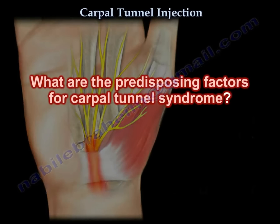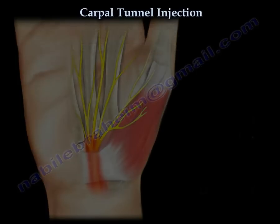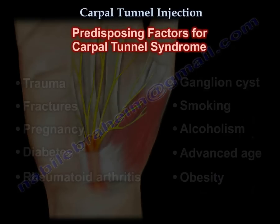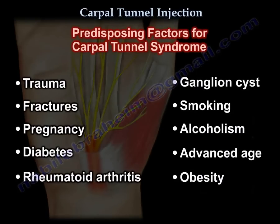What are the predisposing factors for carpal tunnel syndrome? Trauma, fractures, pregnancy, diabetes, rheumatoid arthritis, ganglion cysts, smoking, alcoholism, advanced age, obesity.